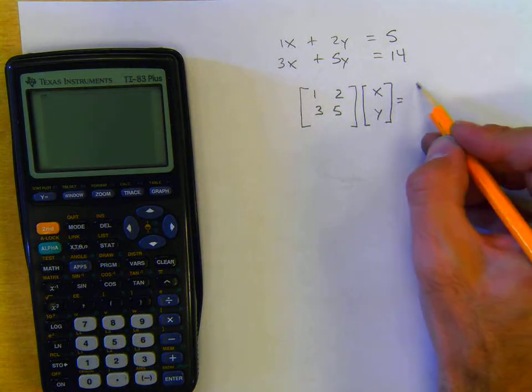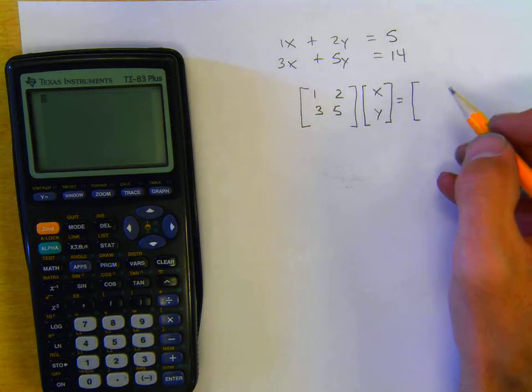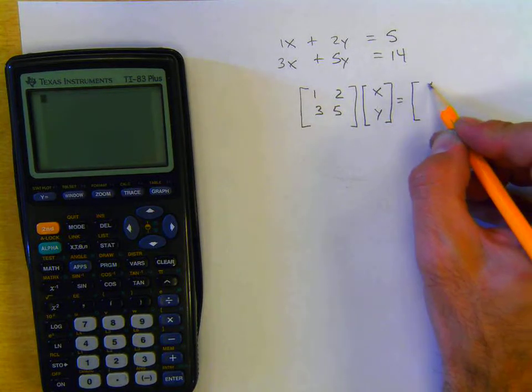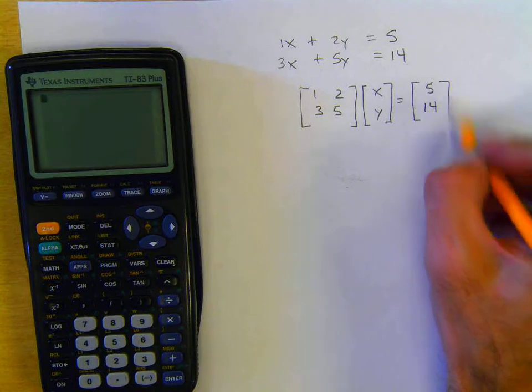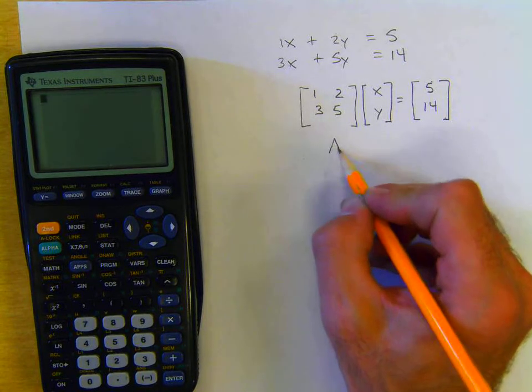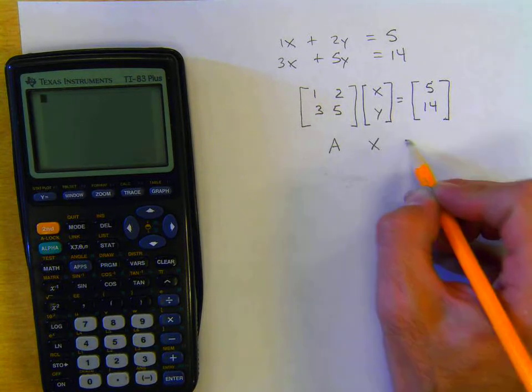Lastly we want to set up a constants matrix. The constants are 5 and 14. We are going to label these matrices A, X, and B.